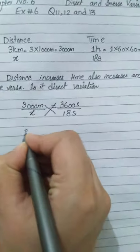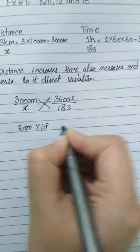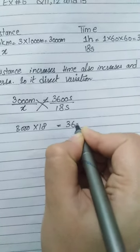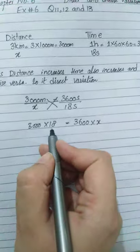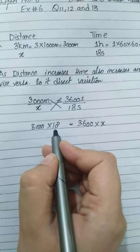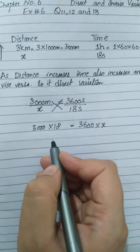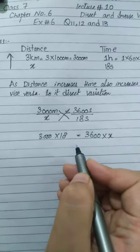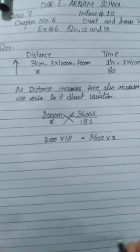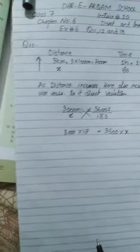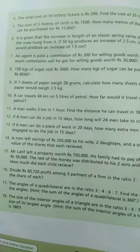Now perform cross multiplication: multiply 3000 by 18 and 3600 by X. Then divide 3000 multiplied by 18 by 3600 to get the answer. This calculation is your task — you have to do it yourself.